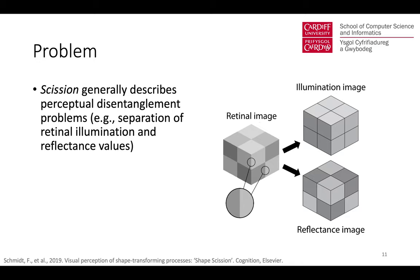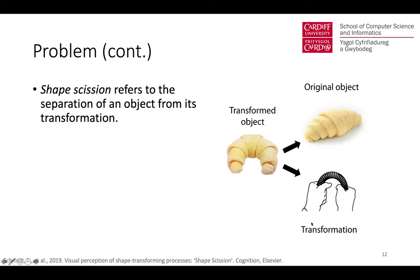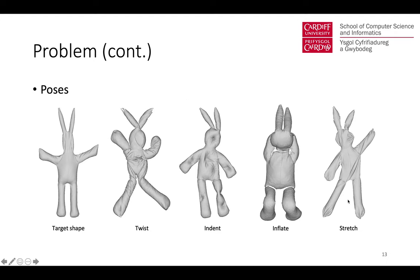For this study, we try to model different types of physically-based deformation. We follow the psychological idea called scission, which describes perceptual disentanglement problems. For shape analysis, shape scission refers to the separation of an object from its transformation. From the original shape scission study, eight principal types of deformation are considered; here we focus on non-destructive deformations, leading to four poses selected based on deformations described in the shape scission paper.